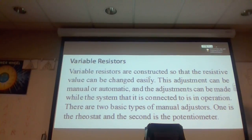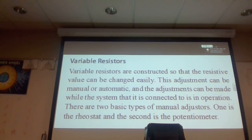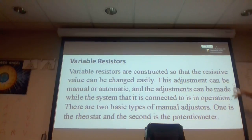So variable resistors are constructed so that the resistance value can be changed easily. The adjustment can be manual or automatic. It can be made while the system is connected and in operation. There are two basic types: one is a rheostat and the other is a potentiometer.